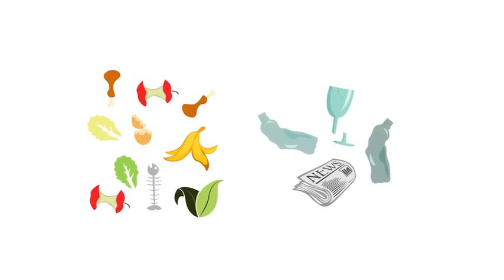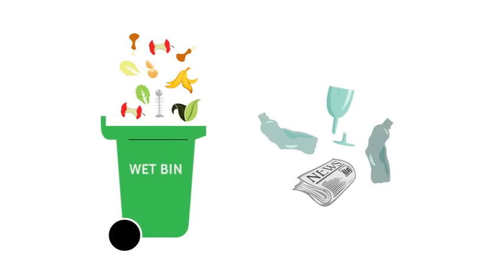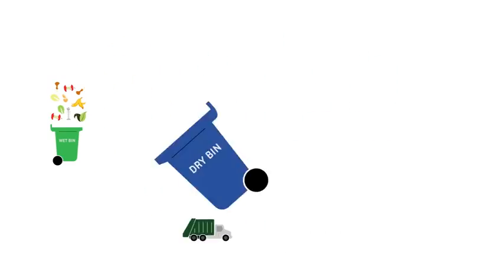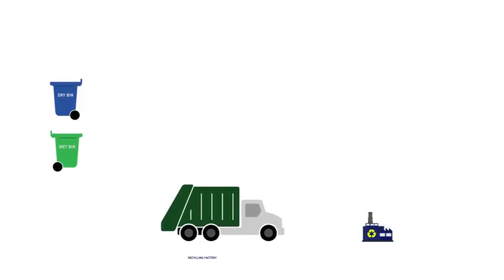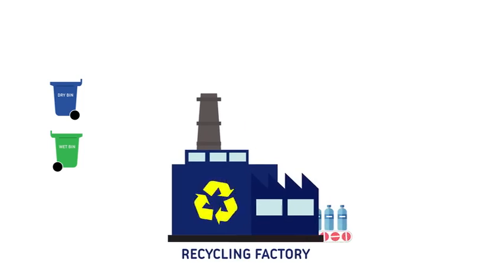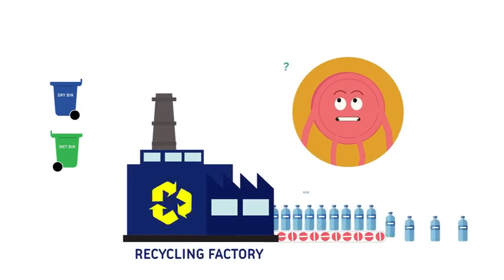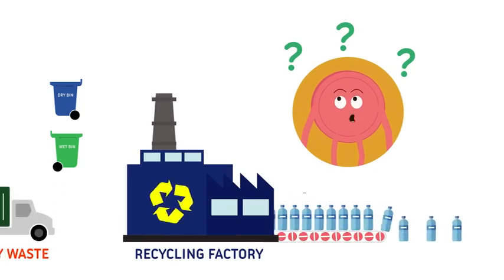When we segregate, garbage either goes into the wet bin or the dry bin. And if it goes into the dry bin, the garbage trucks take it away to the recycling factory, where it can be turned into something new. But how do you know what goes into which bin?